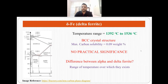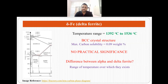When we move above 1392 degrees centigrade, we get a phase called delta ferrite. This phase of iron occurs in the temperature range of 1392 to 1536 degrees centigrade. Delta ferrite also has a BCC crystal structure. However, delta ferrite is not of any practical significance as we do not use it in real life, and its carbon solubility is limited to only 0.09 weight percent.